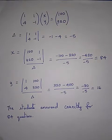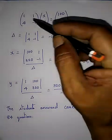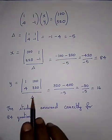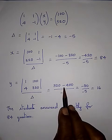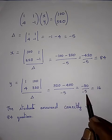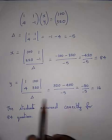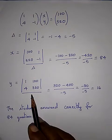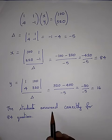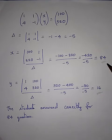Similarly, to find Y, replace the second column with [100; 320], giving the matrix [1, 100; 4, 320]. The determinant is 320 into 1 minus 4 into 100 = 320 − 400 = −80. Dividing by −5 gives Y = 16. So the student answered 84 questions correctly and 16 questions wrongly. As a check, 84 + 16 = 100. Thanks for watching.